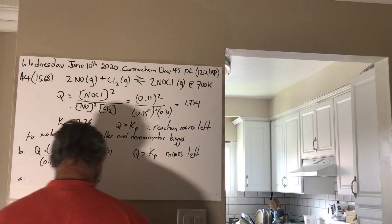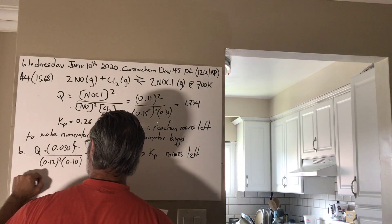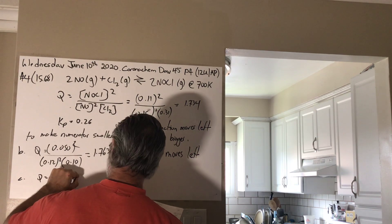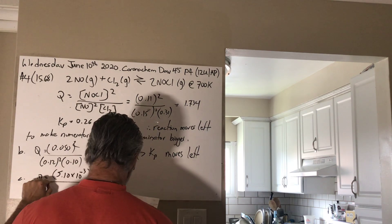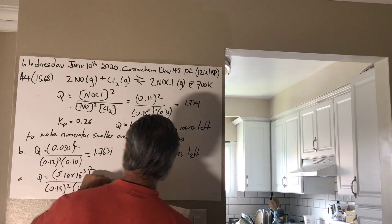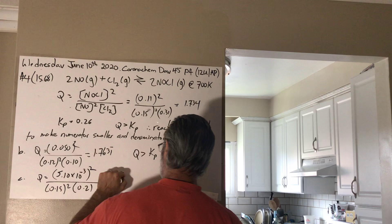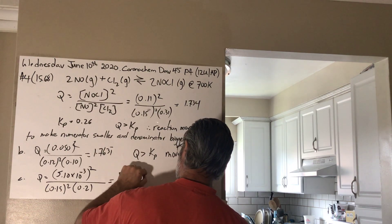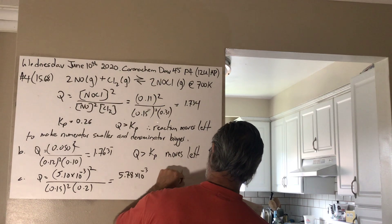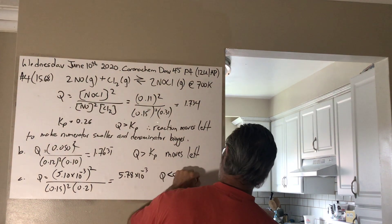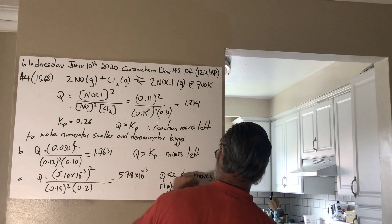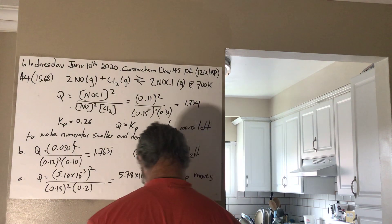And then for C, you've got Q equal to 5.1 times 10 to the negative 3 squared over 0.15 squared times 0.2, which gives you a value of Q of 5.78 times 10 to the negative 3. Q is quite a lot smaller than Kp. Therefore, it's going to move right to achieve equilibrium.